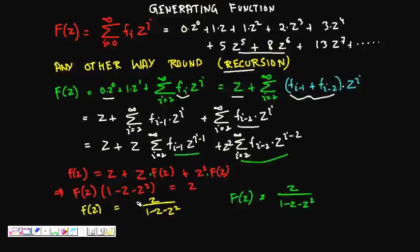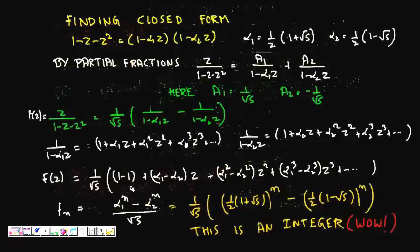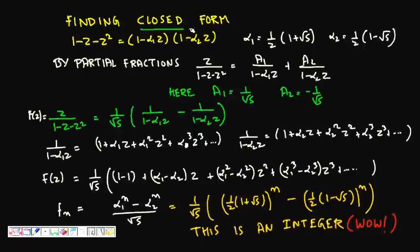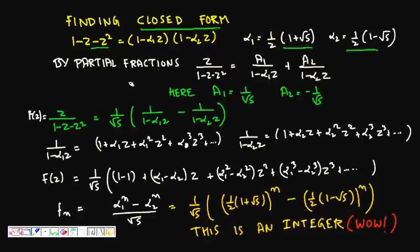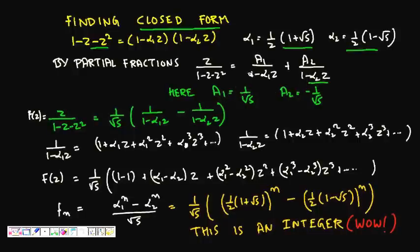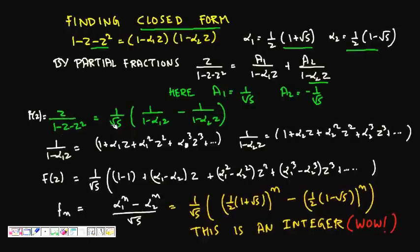After this manipulation we get an algebraic expression for F(z). Now to find the closed form, we factorize the quadratic denominator: 1 - z - z² = (1 - α₁z)(1 - α₂z), where α₁ = (1+√5)/2 and α₂ = (1-√5)/2. Then by partial fractions: z/(1-z-z²) = A₁/(1-α₁z) + A₂/(1-α₂z), where A₁ = 1/√5 and A₂ = -1/√5.